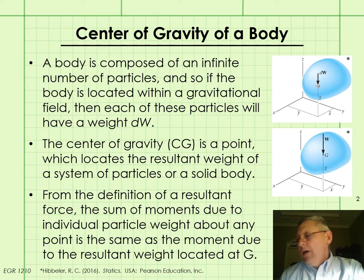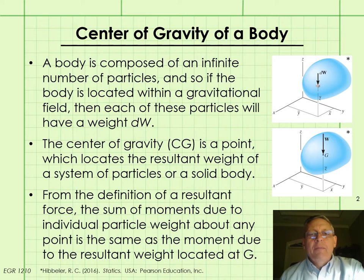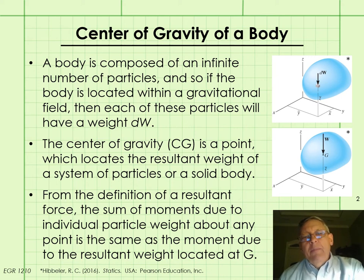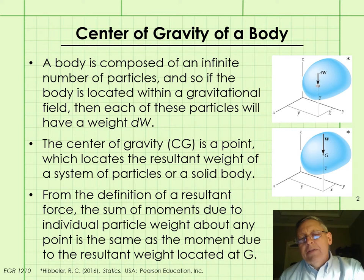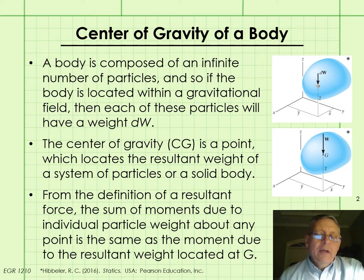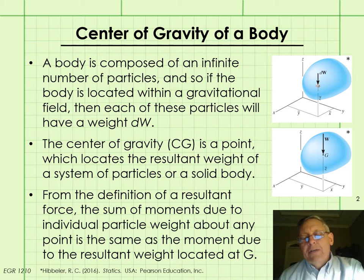We established in Lecture 1 that a rigid body is composed of a large or infinite number of particles. Particles have mass, but we can neglect their size. So if we have a body located within a gravitational field, then each of the particles in the body will have a weight — we'll call the weight of each particle dW. The center of gravity is a point which locates the resultant weight of a system of particles or a solid body.